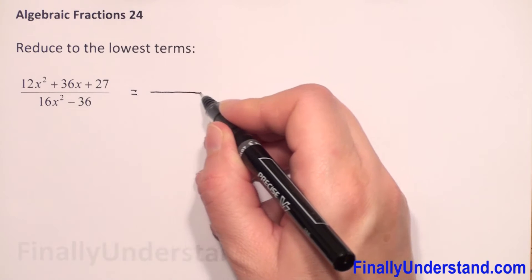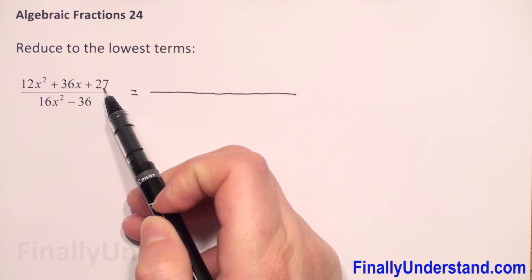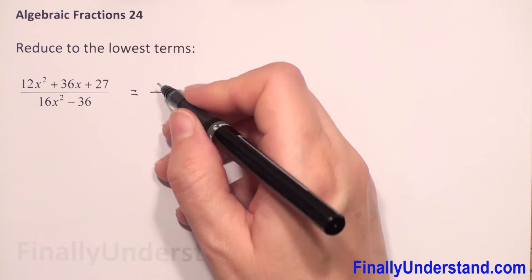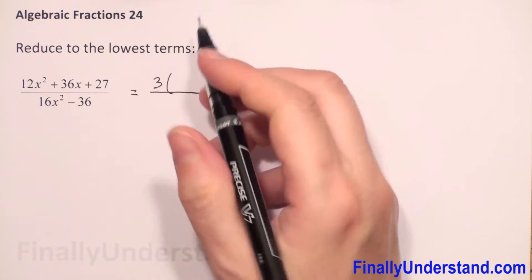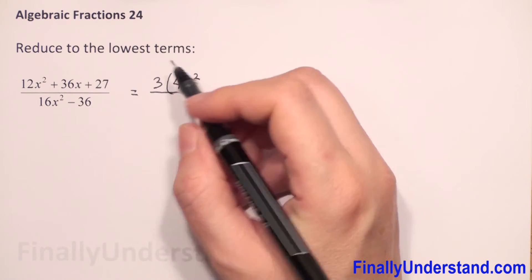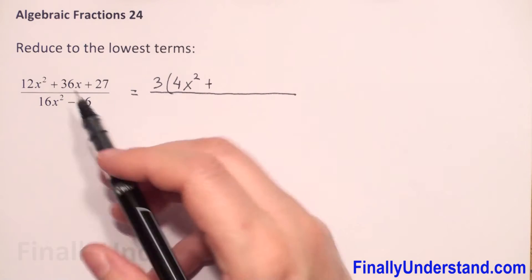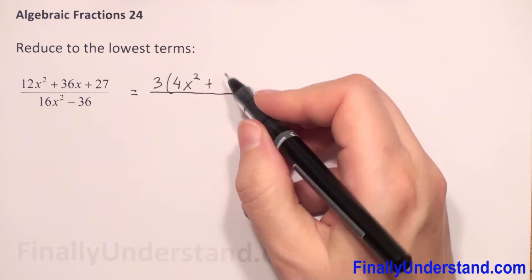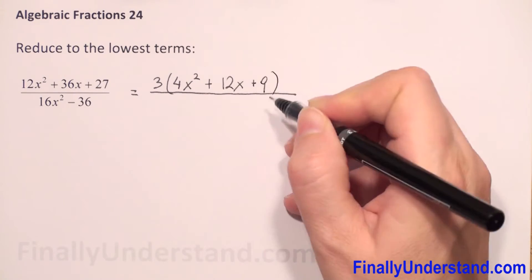Let's see what we have in our numerator. We have the numbers 12, 36, and 27. The greatest common factor for these three numbers is 3. So in parentheses we will have 12 divided by 3 is 4, and we copy x squared, because 3 times 4x² is 12x². Plus, copying the sign, 36 divided by 3 is 12x, and 27 divided by 3 is 9 — so we have plus 9.